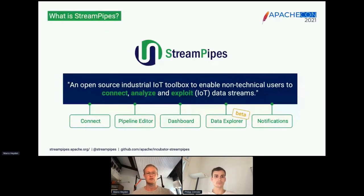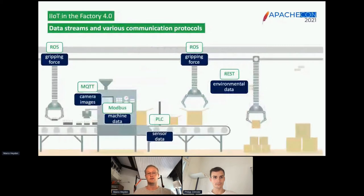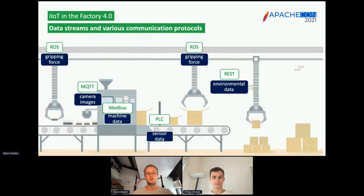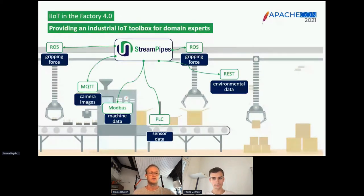What's a good application for StreamPipes? StreamPipes is targeted at industrial IoT — for example, a production line. We have many different components in such a production line which use different messaging protocols. Each component collects sensor data and sends it via MQTT, ROS, or REST interfaces. The goal is to extract information that is actually usable or important from these raw data streams. That's exactly where StreamPipes comes into play — connecting to all these different data sources, creating data analysis pipelines, and observing different KPIs.